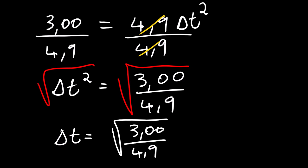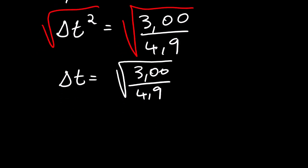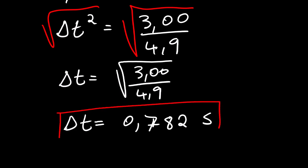Time equals square root of 3.00 over 4.9, which equals 0.782 seconds. So it takes 0.782 seconds for the person to actually reach the water below the board.